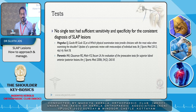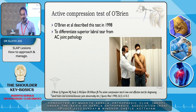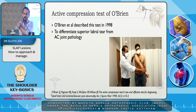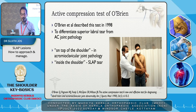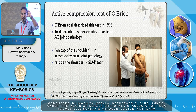The O'Brien's compression test was described in 1998. It differentiates a superior labral tear from an AC joint pathology, because both can cause discomfort. You can differentiate by doing the test in internal rotation and then in external rotation. In internal rotation, significant pain or weakness suggests superior labral pathology — pain felt more inside the shoulder. Pain on top is mainly acromioclavicular joint pathology. Learn to pick this up, because the MRI report may say nothing about the superior labrum.